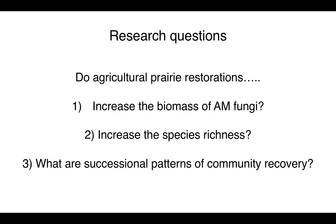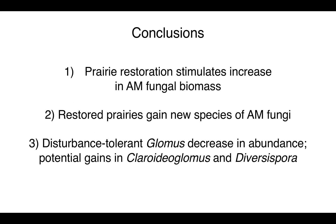In conclusion, I set out to conduct a study on AM fungi in restored agricultural prairies, which there have been very few studies on previously. I wanted to know if prairie restorations increased AM fungal biomass, AM fungal species richness, and I wanted to identify which species are being recovered into the community. The answers are yes — there were substantial increases in AM fungal biomass and species richness. I observed that disturbance-tolerant Glomus species were dominant in crop fields but were reduced as communities were recovering. And I discovered two new genera, Chloroideoglomus and Diversospora, that showed an early successional pattern and increased in abundance consistently across farm sites.